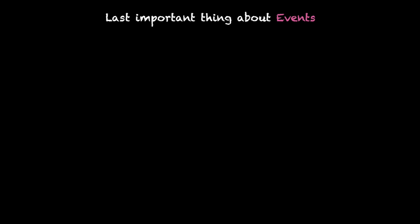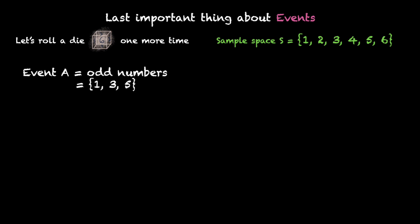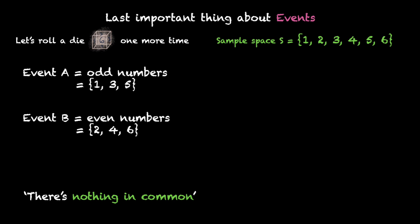Now let's look at the last important thing about events — in my opinion one of the most confusing things about this topic. Let's roll a die one more time. The sample space is {1, 2, 3, 4, 5, 6}. Event A is the set of odd numbers, event B is the set of even numbers. Event A has occurred when we get an odd number and event B has occurred when we get an even number. There's nothing in common between A and B — either the number is odd or the number is even.